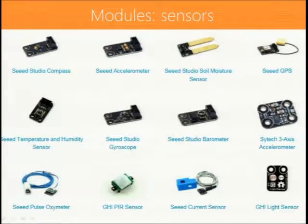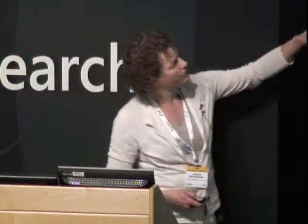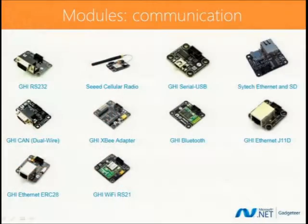By now, a whole lot of sensors are available. These slides give a brief overview of the types of modules available. There are sensors to measure moisture, temperature, humidity, and more unusual things like pulse oximeters and GPS. Then there are modules for communication — wired communication like Ethernet, and wireless communication including Wi-Fi, Bluetooth, Zigbee, and cellular radio.